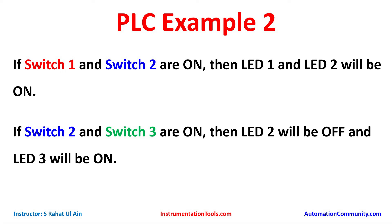If Switch 1 and Switch 2 are on, then LED 1 and LED 2 will be on. If Switch 2 and Switch 3 are on, then LED 2 will be off and LED 3 will be on. That means if Switch 1 and Switch 2 are both on, LED 1 and LED 2 will be on. And if Switch 2 and Switch 3 are on, that doesn't matter whether Switch 3 is on or off — but if both Switch 2 and Switch 3 are on...